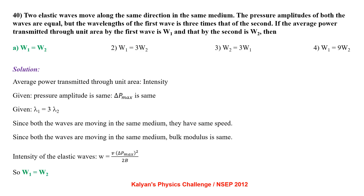Two elastic waves move along the same direction in the same medium. Pressure amplitudes of both waves are equal but wavelength of the first is 3 times that of the second. Intensity W = V·ΔP_max²/(2B). Since both waves travel in the same medium, V and B are the same, and ΔP_max is the same for both. Therefore W₁ = W₂.